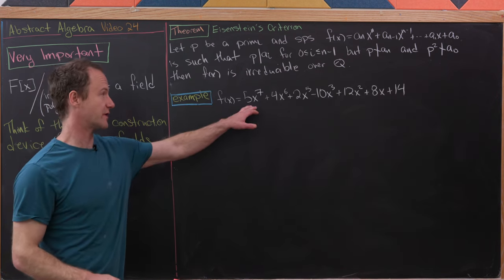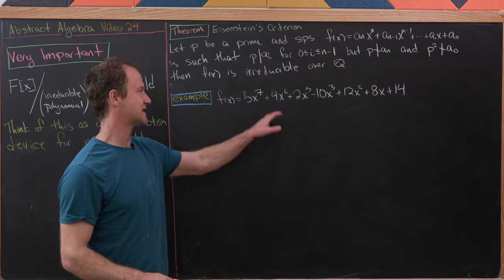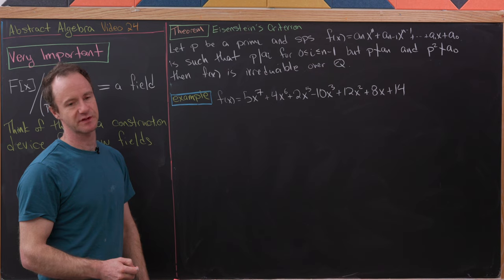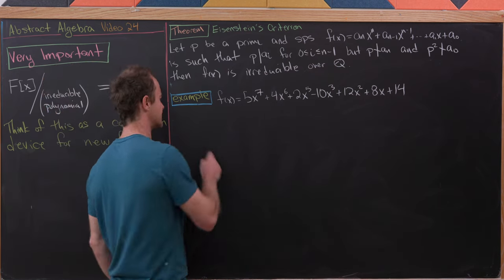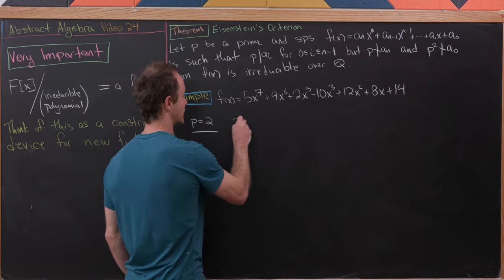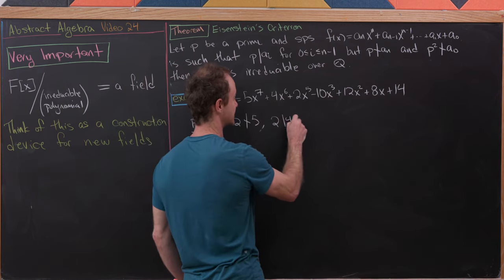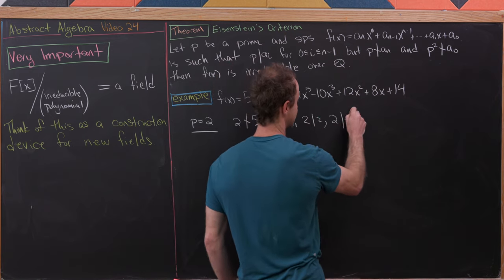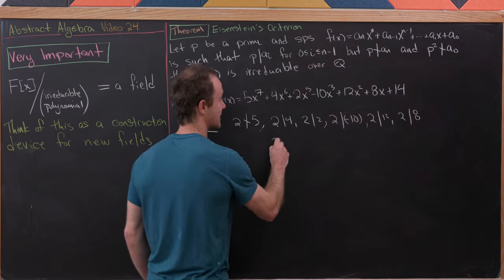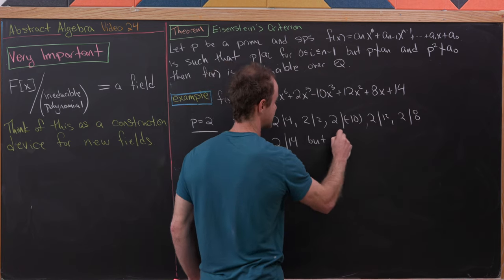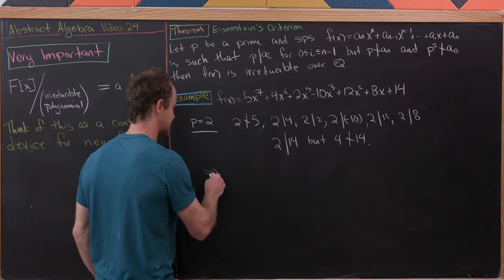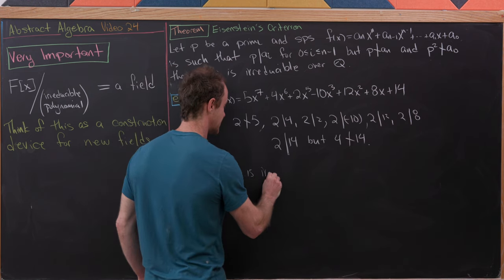Example: consider f(X) = 5x⁷ + 4x⁶ + 2x⁵ − 10x³ + 12x² + 8x + 14. Take p = 2. Then 2 ∤ 5 (leading coefficient), while 2 | 4, 2 | 2, 2 | −10, 2 | 12, 2 | 8, 2 | 14, and 4 ∤ 14 (p² doesn't divide the constant term). Eisenstein's criterion applies, so f(X) is irreducible over Q[X], and Q[X]/⟨f(X)⟩ is a field.